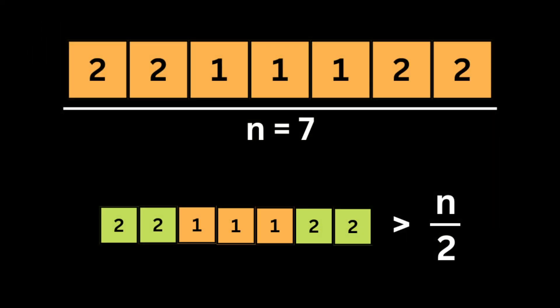For example, let's say we have this input array. The answer will be 2 because 2 occurred 4 times, and 4 is bigger than the length of the array divided by 2.